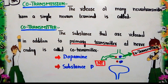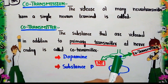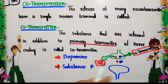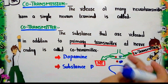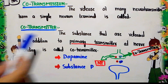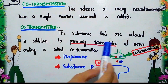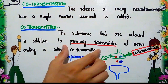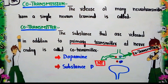The primary neurotransmitter is the main chemical messenger that transmits the nerve impulse or message from the presynaptic neuron to the postsynaptic neuron. Along with the primary neurotransmitter, another substance is released — this is called a co-transmitter, a substance released in addition to the primary neurotransmitter at the nerve ending.